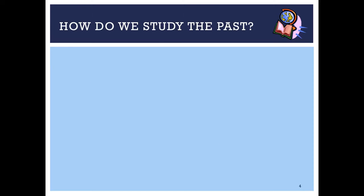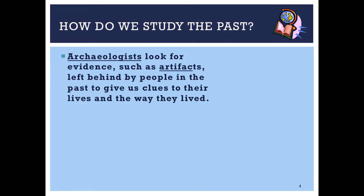If we're focusing on history — the basic element of social studies that most people commonly think of — the question becomes: how do we study the past? That is our new left-side question in our Cornell notes. The first thing we need is evidence. Evidence tells us what happened, and so we have to seek evidence. That's where archaeologists come in. Archaeologists are people who look for evidence such as artifacts left behind by people in the past to give us clues to their lives. An artifact is basically an object or thing from the past that helps us to decipher or understand what happened.